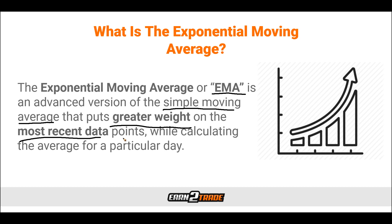This is different from calculating the simple moving average, where all data points quite simply just have the same weight and we're provided with a simple average. The disadvantage of the simple moving average, some argue, is the fact that if everything is weighed equally, it's not going to give us an advantageous look at what is currently happening — which is where most traders want to focus. With the EMA on the other hand, it's more responsive to current changes in the market by placing more weight on the latest developments in price.